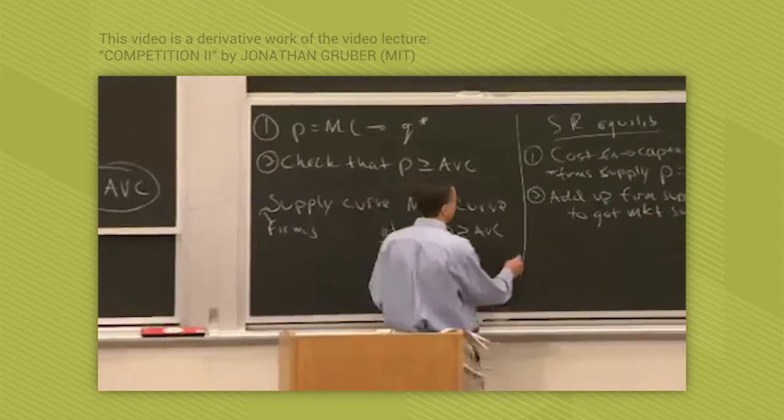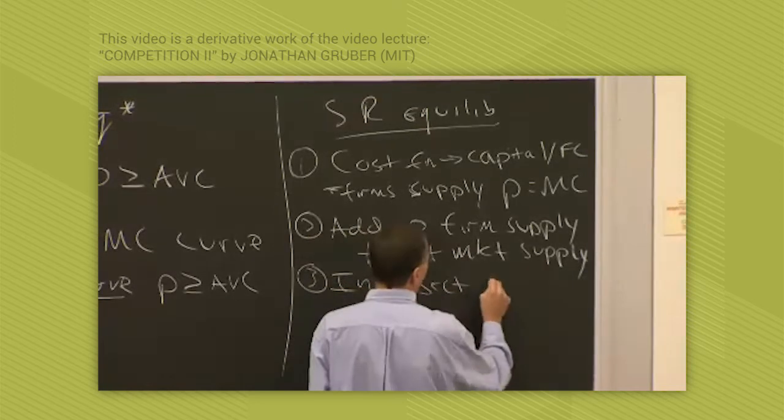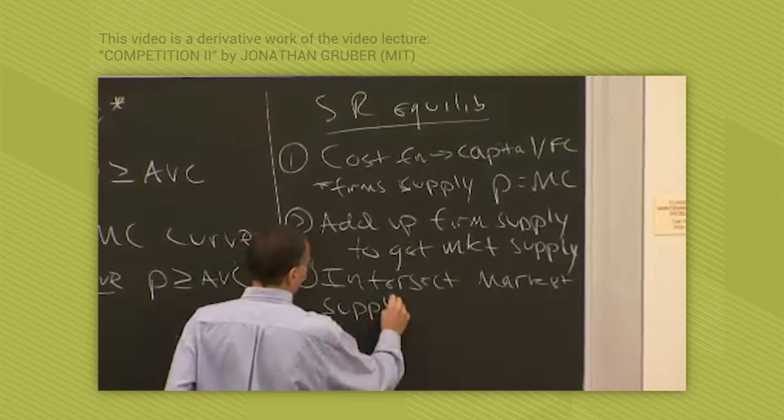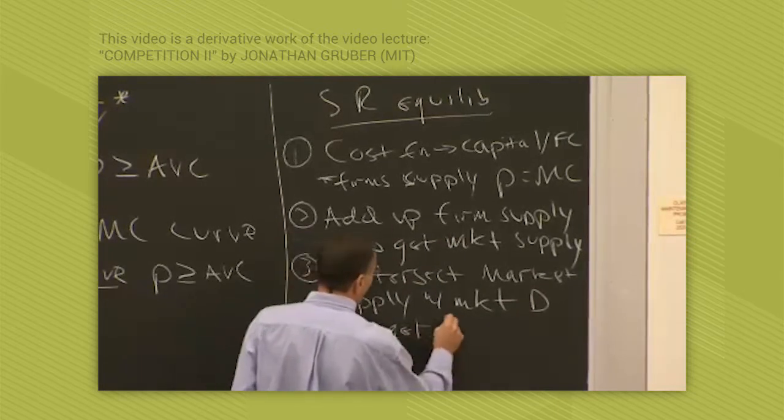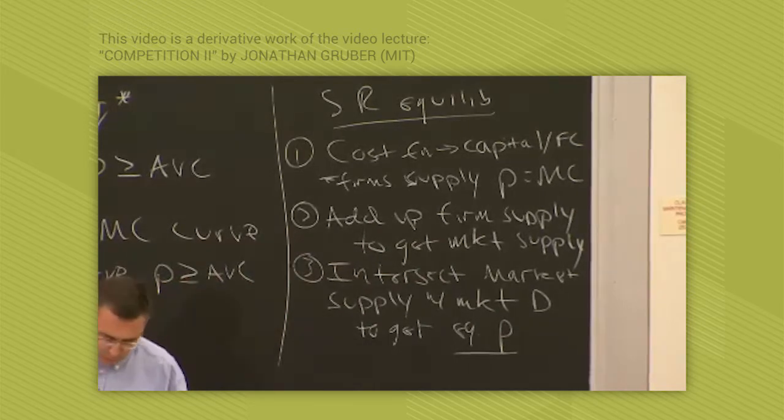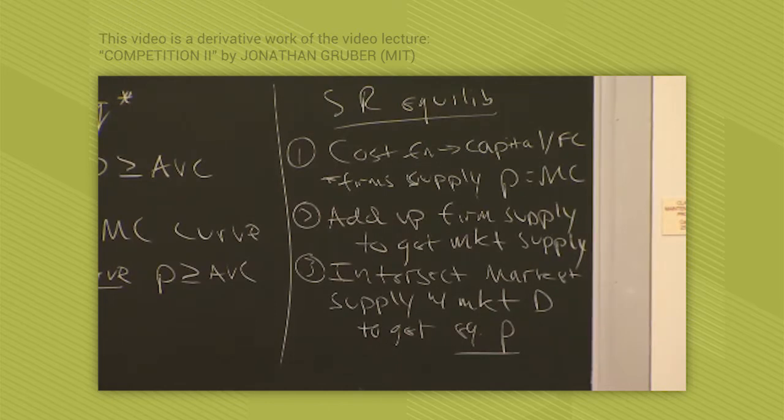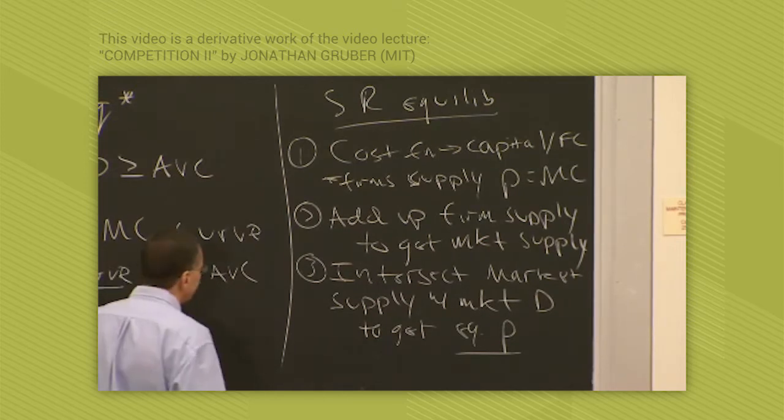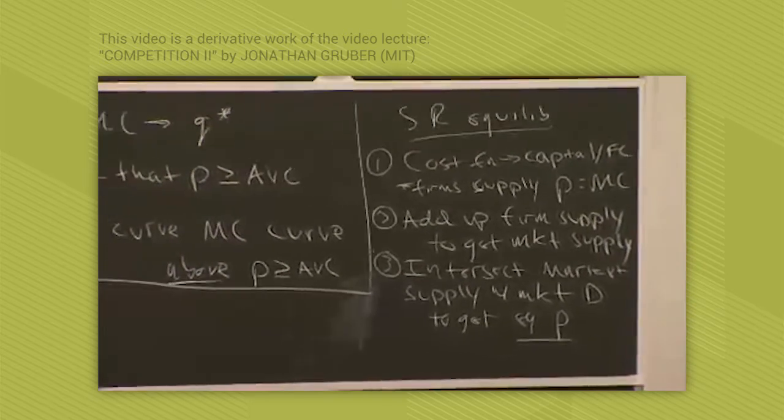The third step is we intersect market supply with market demand to get the equilibrium price. In other words, we say, look, there's some market supply, which we've derived. Now let's imagine there's some market demand, and that'll give us the equilibrium price. So for example, in our case, market supply is what?